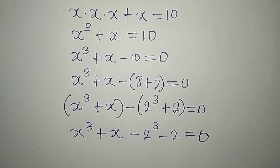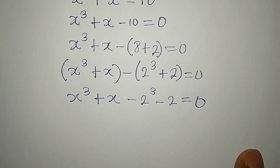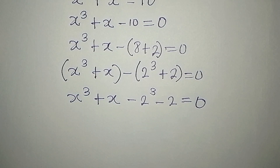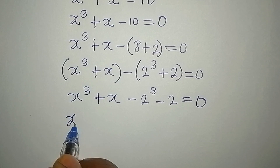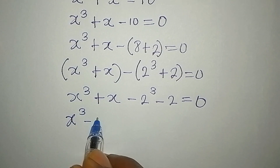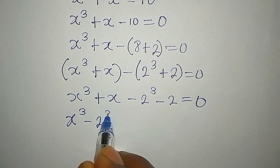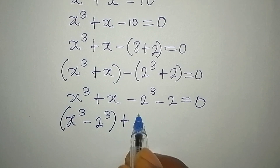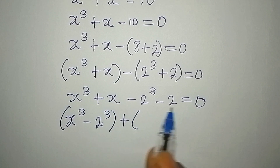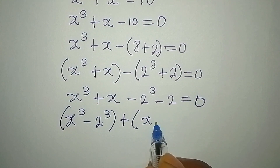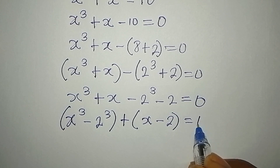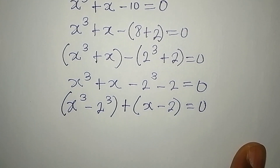Everything is equal to zero. From here we need to regroup so that x to the power of 3 and 2 to the power of 3 are together. So now we have x³ minus 2³, which we will deal with separately, then plus open bracket x minus 2, close bracket, and this equals zero.